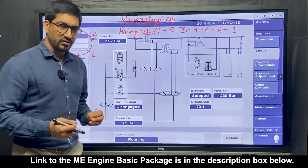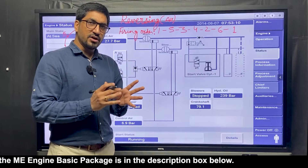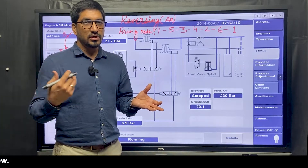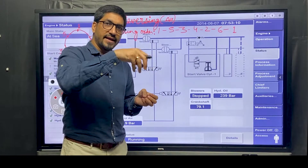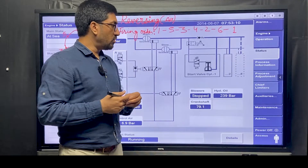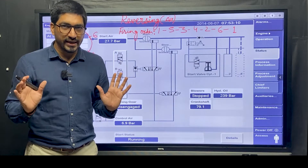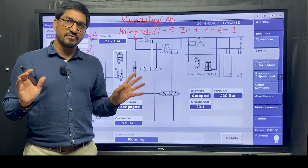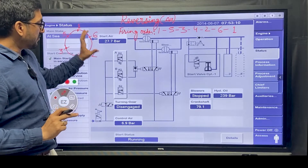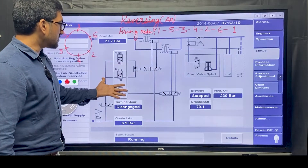When we talk about reversing, what that means is when I give a kick, my air should go in such a manner that when previously it was going ahead and now I want to turn it astern, the starting air going into the cylinder is different this time - because only that will make it turn astern. All control is in the hands of the MPCs only. There is no mechanical thing that is reversing here; everything is controlled by MPC.